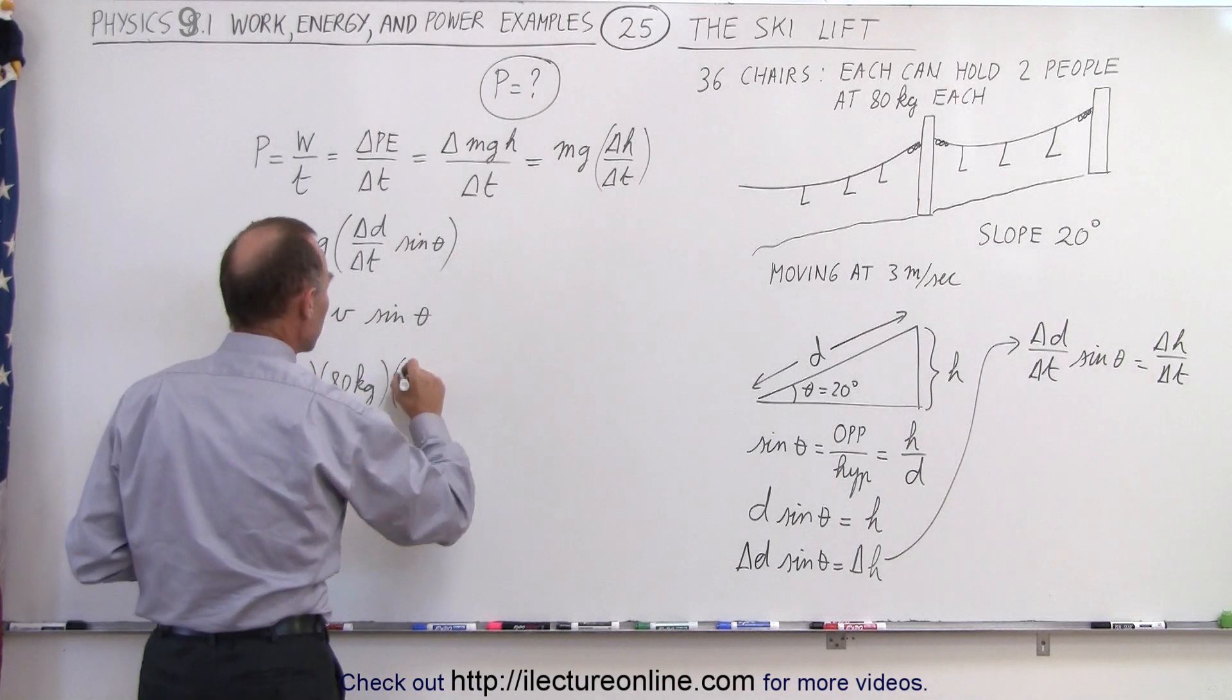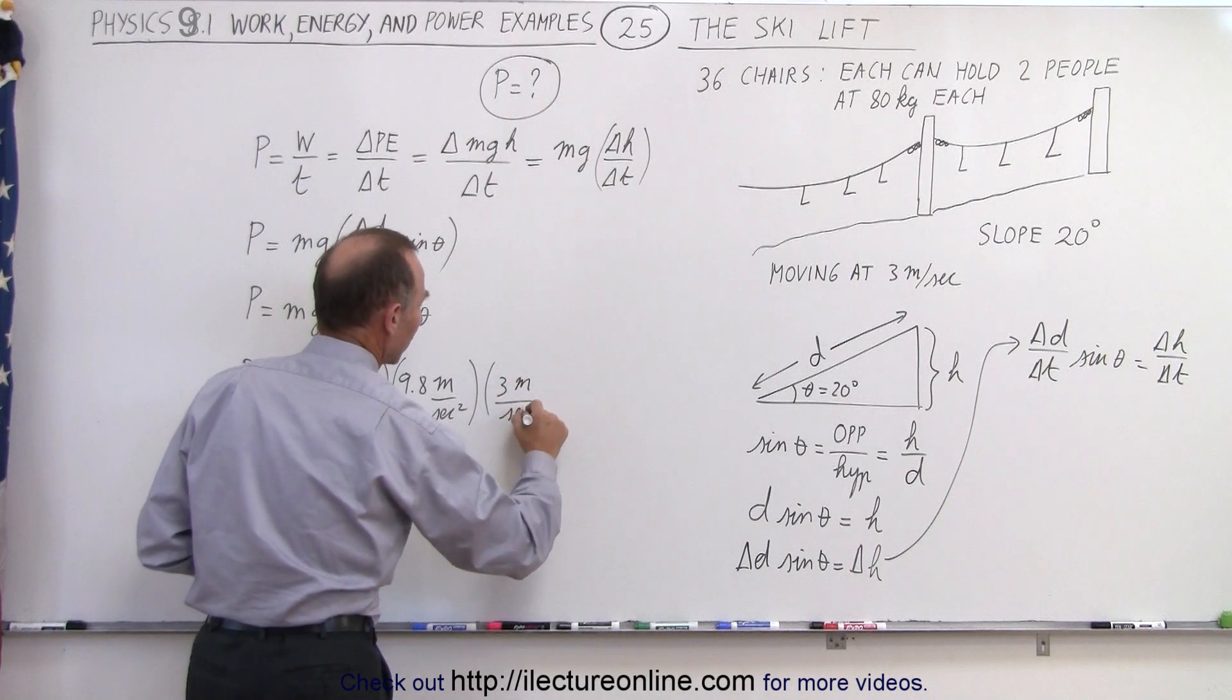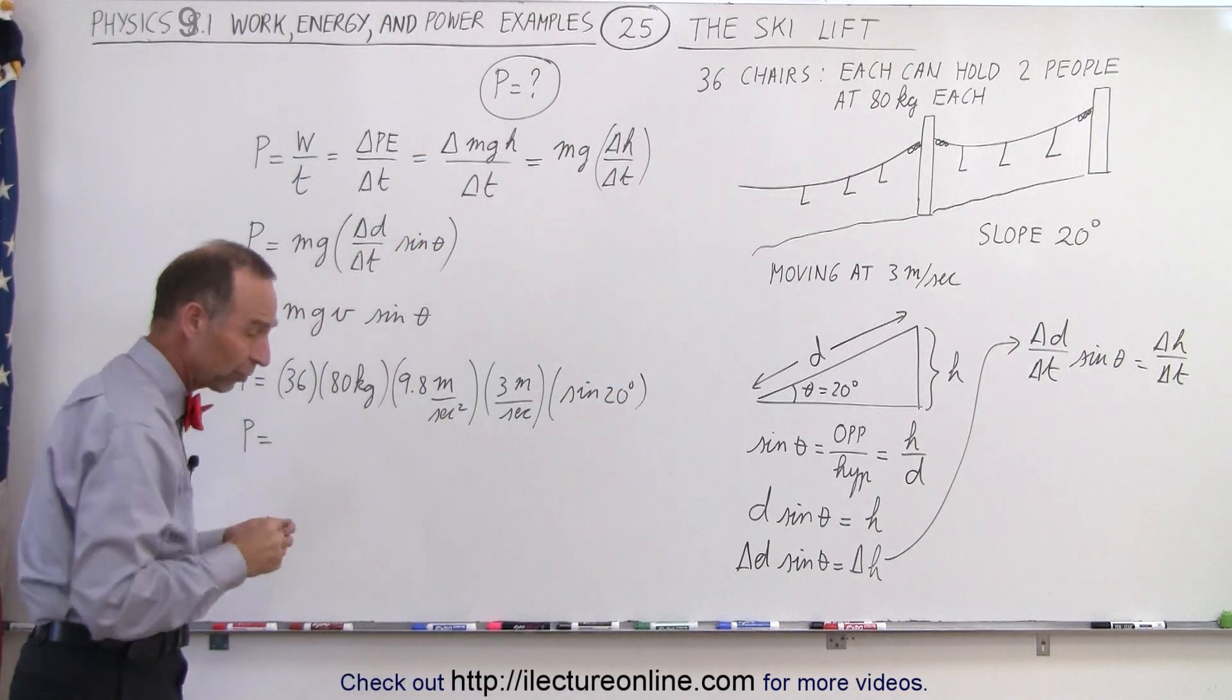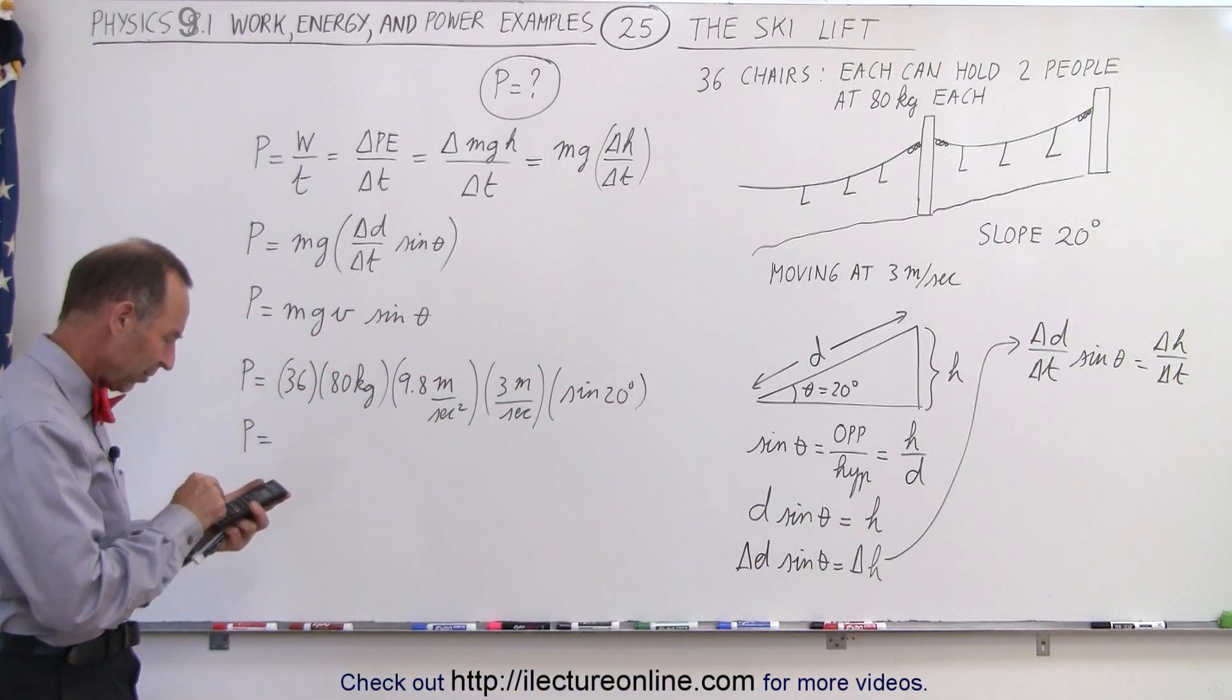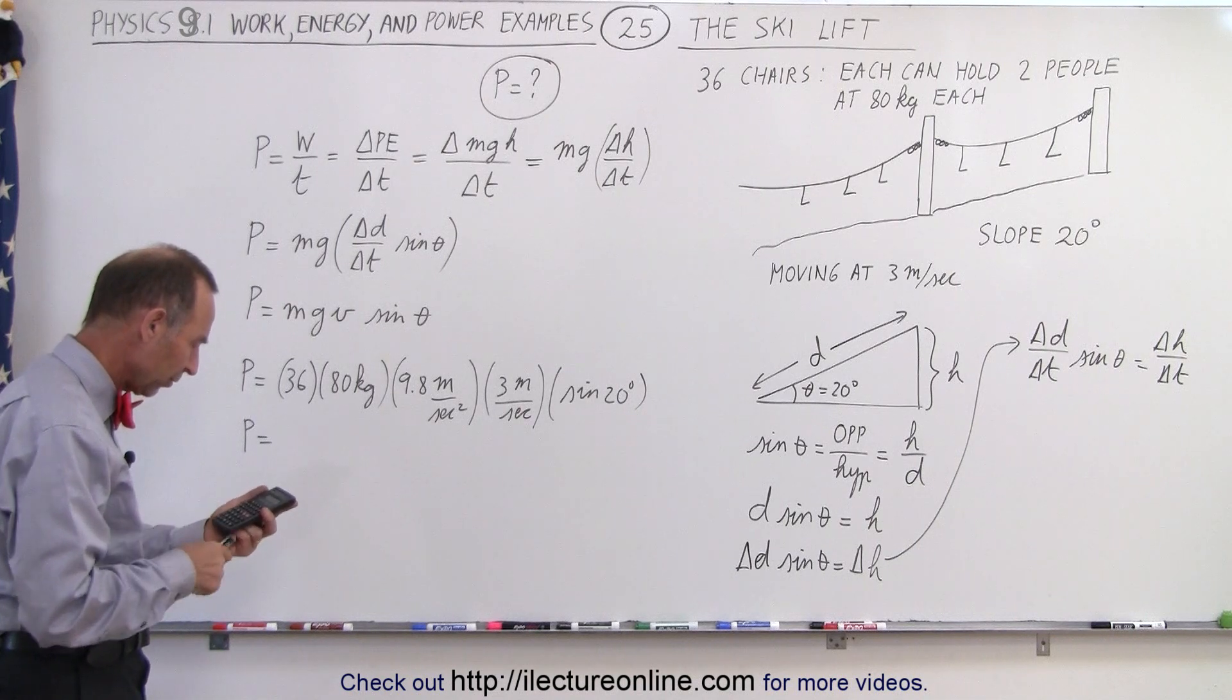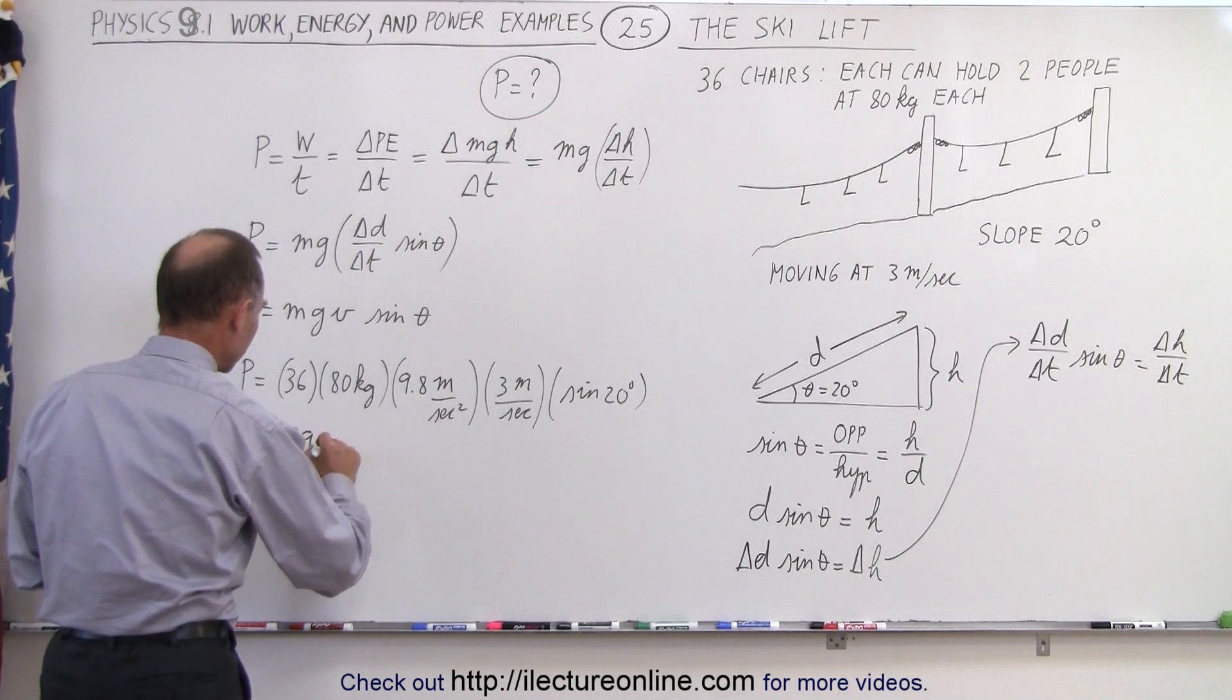g is 9.8 meters per second squared and v is 3 meters per second, and then we multiply that times the sine of 20 degrees, and that means we get power in terms of watts. So let's calculate what that is equal to. So we have 36 times 80 times 9.8 times 3 times sin(20) equals, and that gives us about 29,000 watts.